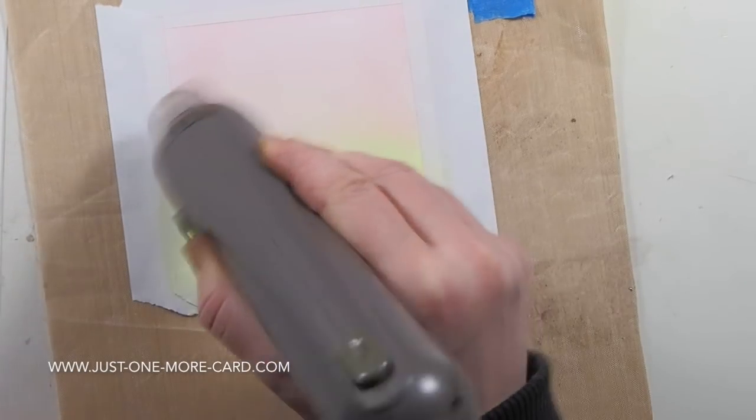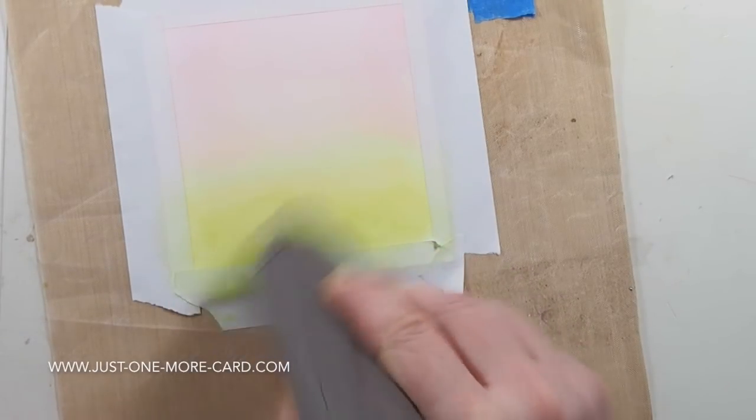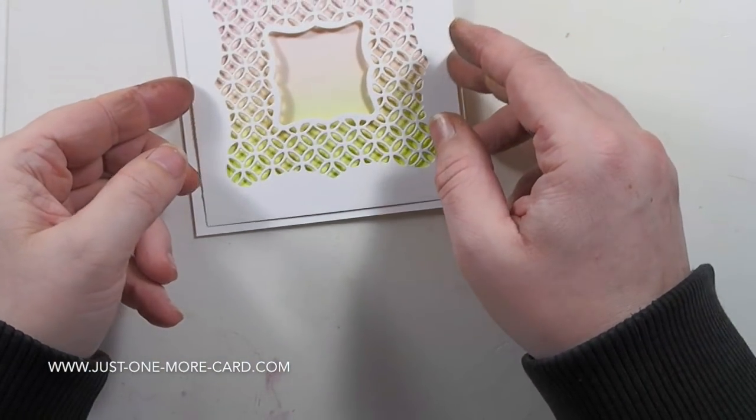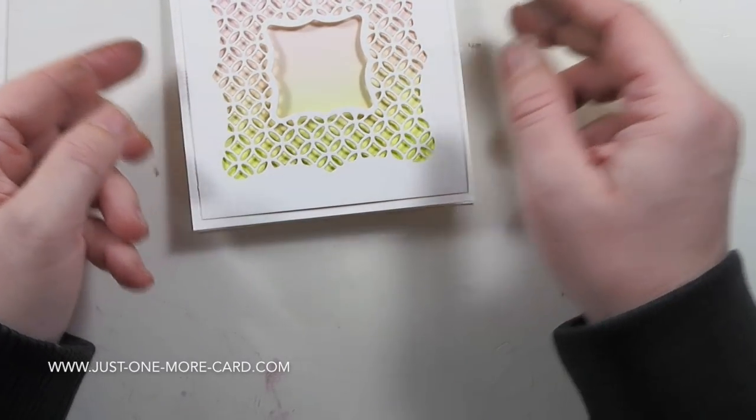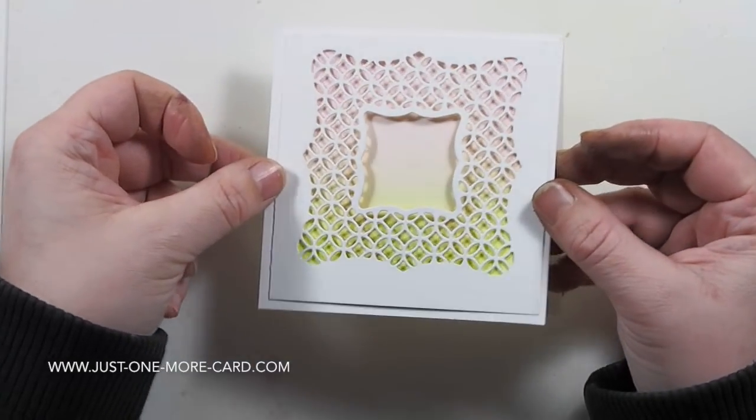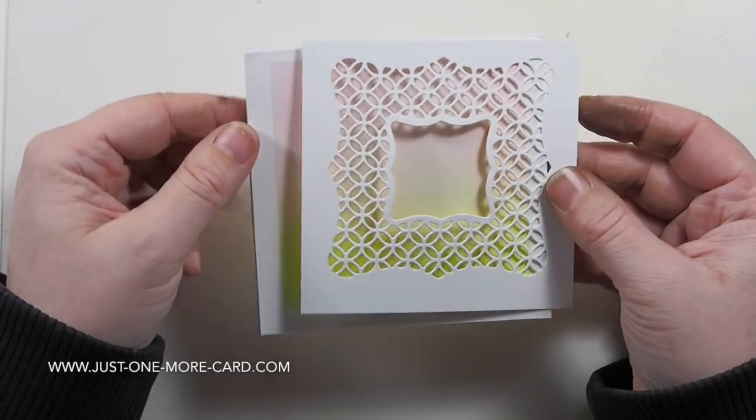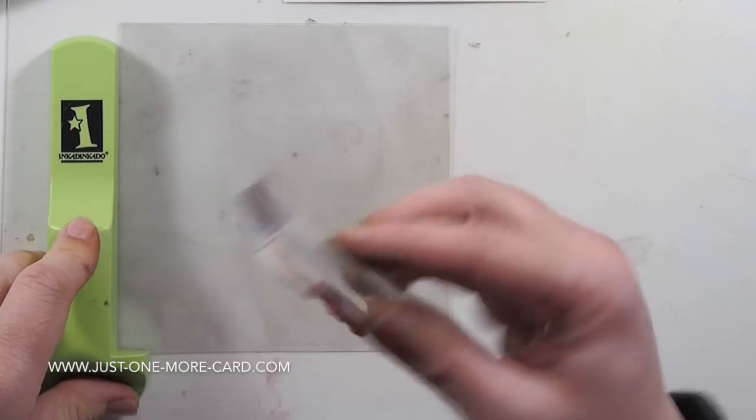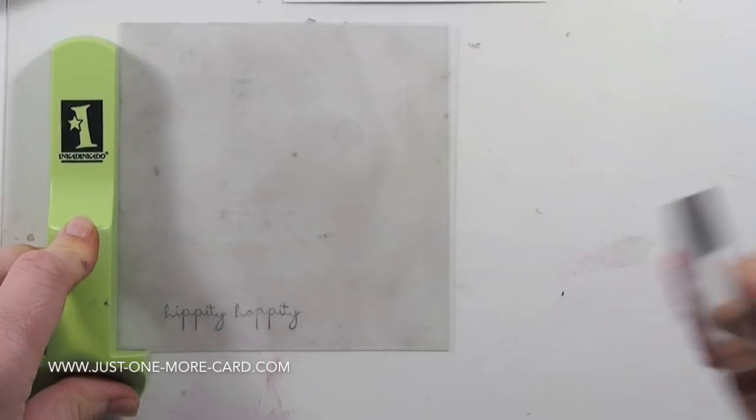I'm spritzing this very slightly with a mix of perfect pearls and water—very slightly because this is Neenah Desert Storm heavy cardstock and it's not reacting too well with water. So a mixture of water and perfect pearls will give me very nice shimmer, and you can see here how the color will shine through this very intricate die cut.